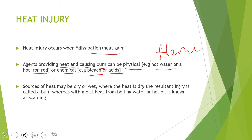As previously mentioned, the sources of heat may be dry or wet. Where the heat is dry, the resultant injury is called a burn. Where the heat is moist — for example from boiling water or hot oil — this causes a different pattern of injury known as scalding.